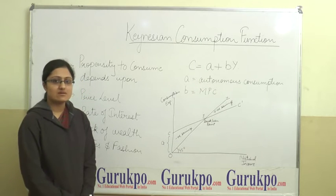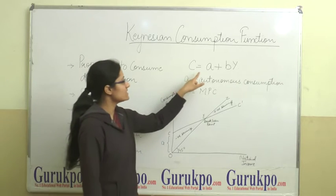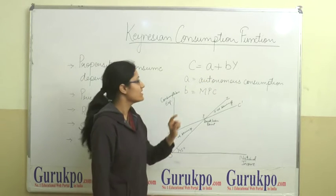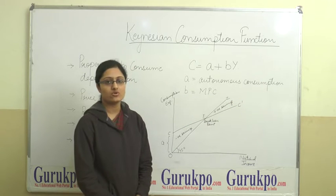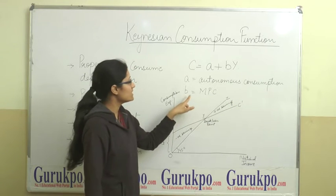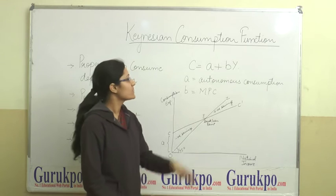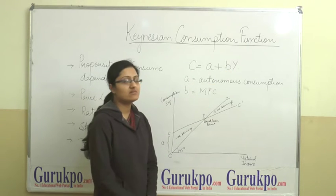So our consumption function is in the form C equals A plus BY where A is autonomous consumption which does not depend upon the level of income. B is marginal propensity to consume, C is consumption and Y is our income level.